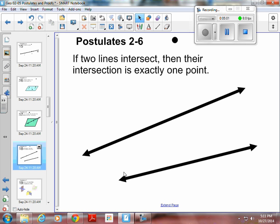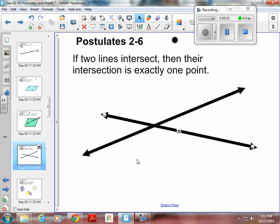Postulate 2, 6. If two lines intersect, then their intersection is exactly one point. So two lines cannot intersect in more than one point in our Euclidean geometry that we're studying. So that is my intersection point P. And anytime you have two intersecting lines, you can name the intersection by a point, and you know it's there.